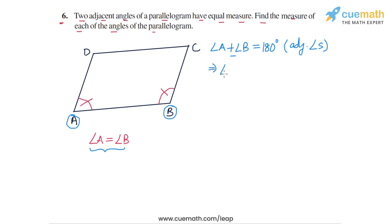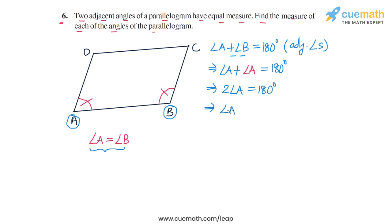So in this equation, I can write angle A and then instead of angle B, I can write angle A again. So angle A plus angle A is equal to 180 degrees, which means twice of angle A is equal to 180 degrees, or angle A is equal to 90 degrees. And this means that angle B is also equal to 90 degrees. So we can conclude both angle A and angle B must be equal to 90 degrees.